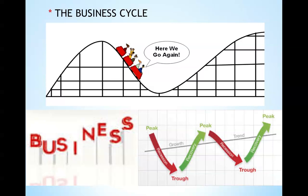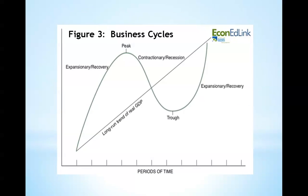Said indicators are employment, price change, and economic growth in the short run. There are four different phases to the business cycle. First is the expansionary phase. During this phase, real output is increasing and unemployment is decreasing. As it continues, inflation may accelerate. The early stage of an expansionary phase is also called the recovery phase.